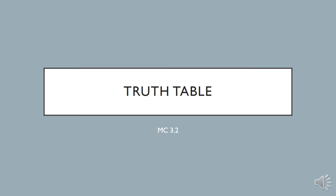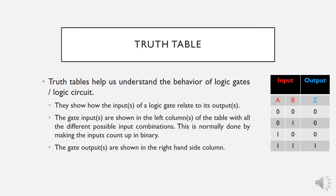In the previous session I briefly introduced the concept of truth tables. A truth table is basically a table that shows the relation between the input and the output in a digital logic circuit. In this session we will look into more details on how to actually build a truth table for any logic circuit. The truth table shows a logic circuit with two inputs, A and B, and one output Z. The inputs are on the left side and the output is on the right side.